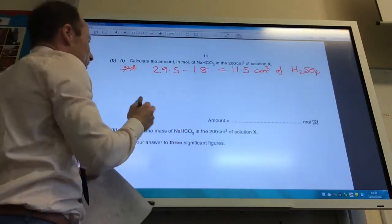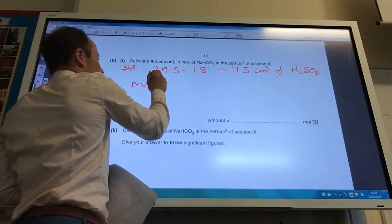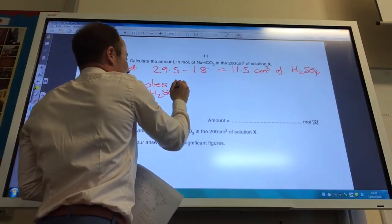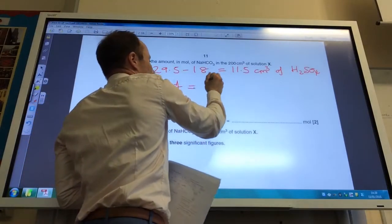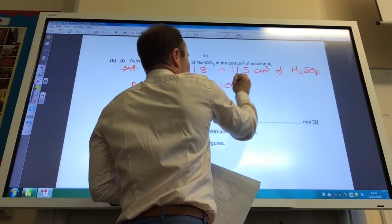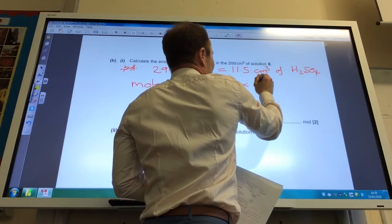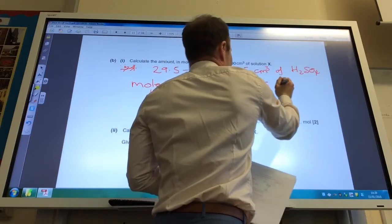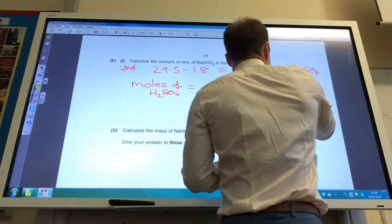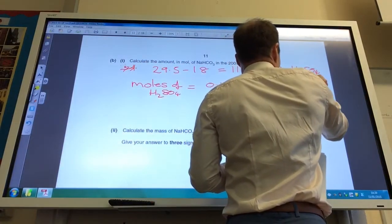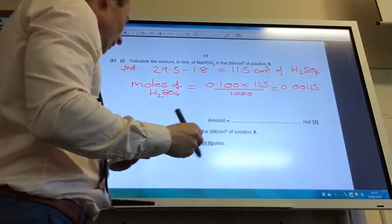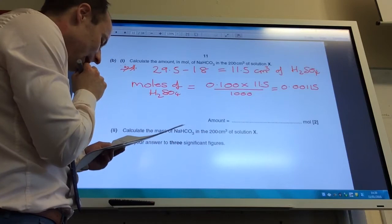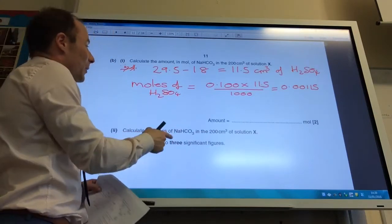Okay, so let's now do moles. I've got the volume, so now I'm going to work out my moles of sulfuric acid. Same way as I mean, the concentration times the volume over a thousand and that gives me 0.00115. So that was a mole of sulfuric acid.